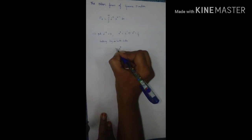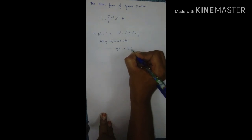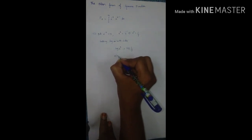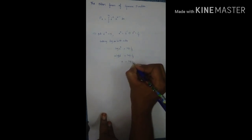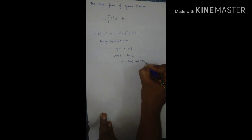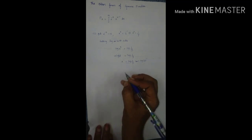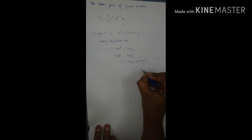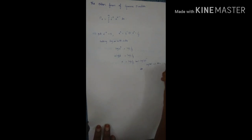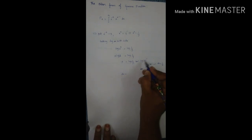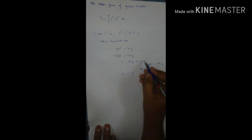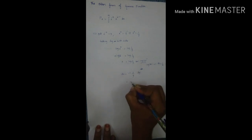Taking logarithm on both sides: log of e to the power of x equals log of 1 by y. So x times log e equals log of 1 by y. Since log e cancels, x equals log of 1 by y, which equals log y inverse. Therefore dx equals minus 1 by y dy.